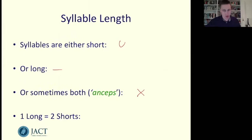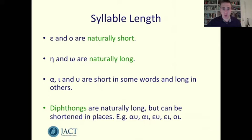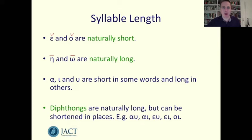In Greek there are two vowels which are naturally short. These are epsilon, the short e, and omicron, the short o. And there are two vowels which are naturally long. There's eta which is a long e and there's omega which is a long o. The vowels alpha, iota and upsilon are in some words short and in other words long.